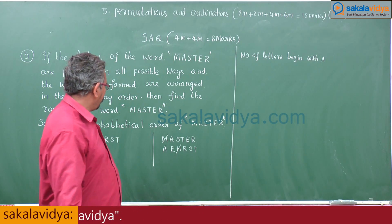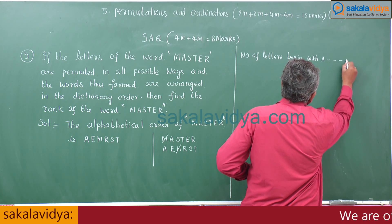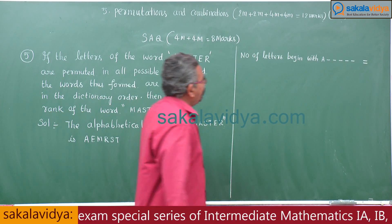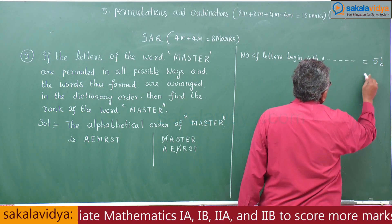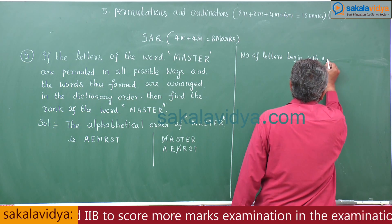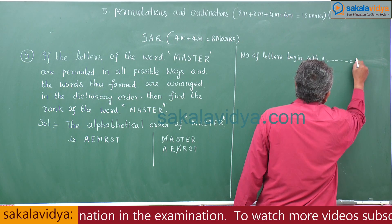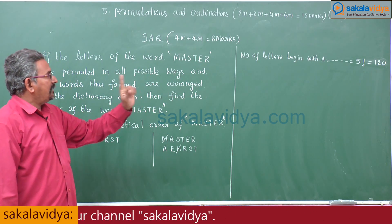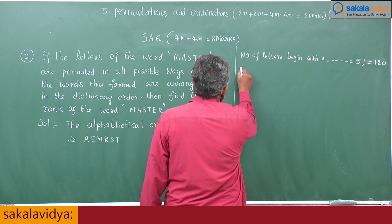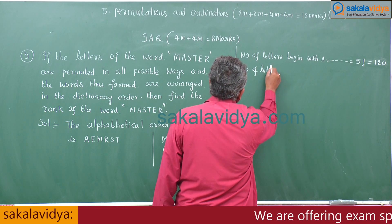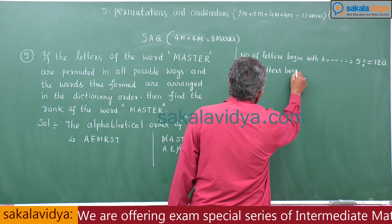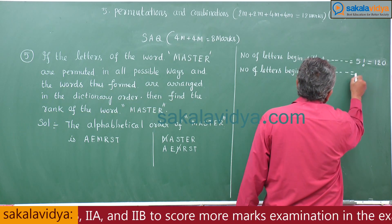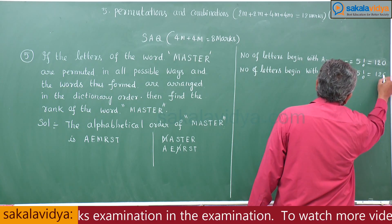Number of words beginning with A: after A there are 5 empty places, which can be filled by the remaining 5 letters, so that is 5 factorial = 120. Similarly, number of words beginning with E is also 5 factorial = 120.